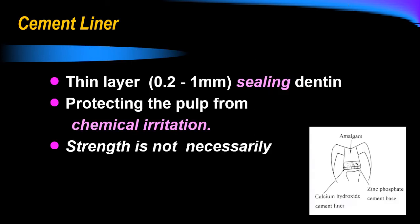The cement liner is a very thin layer of cement placed between the base of the cavity and the dental pulp. The main function of the cement liner is sealing the orifices of the dentinal tubules and protecting the pulp from chemical stimuli, which may come from the overlying filling material. High strength is not necessary for the liner because it is covered by the cement base.